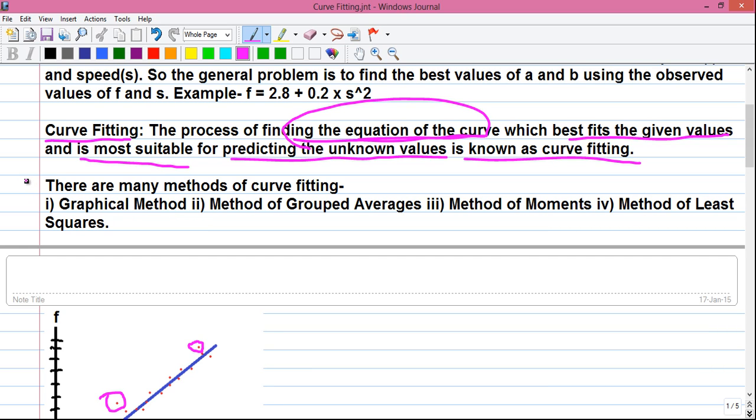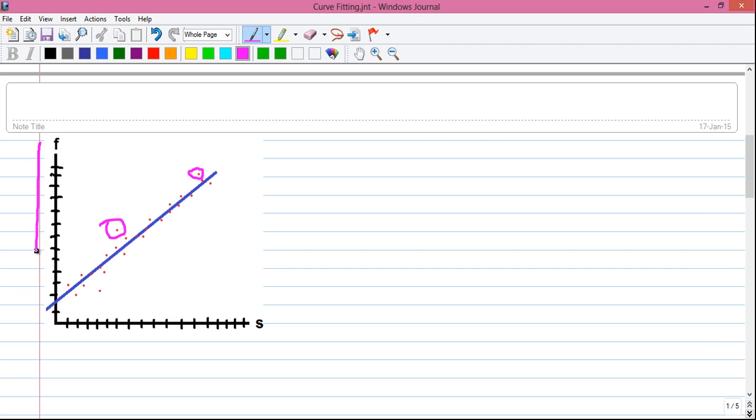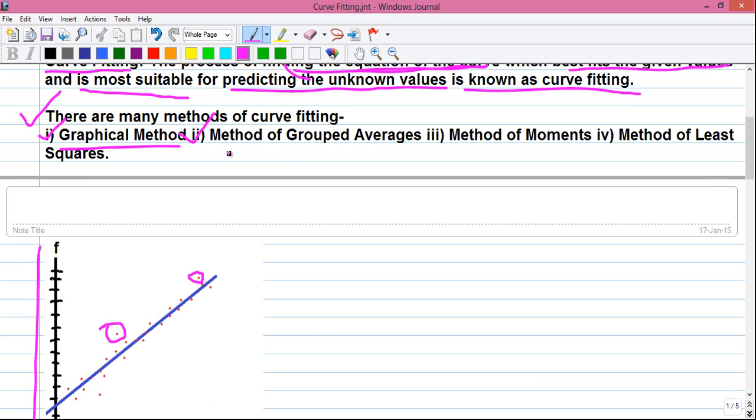Now let's move to the methods of curve fitting. There are many methods of curve fitting. Number one is the graphical method. In graphical method we draw a graph and from that we visually see or visually predict the respective values of y for given value of x. Next method is the method of group averages, third method is method of moments, and the fourth method is method of least squares. So in this series of tutorials I will tell you how to do curve fitting by method of group averages and method of least squares.